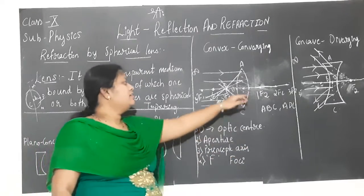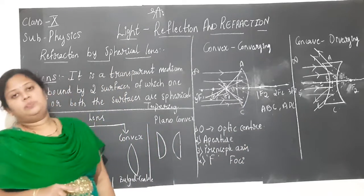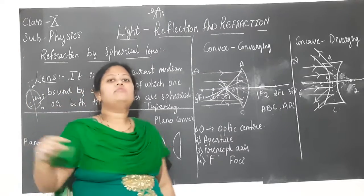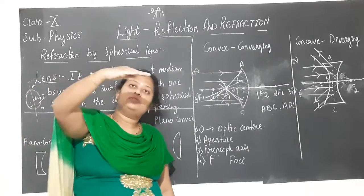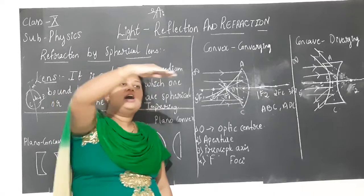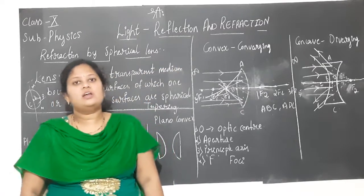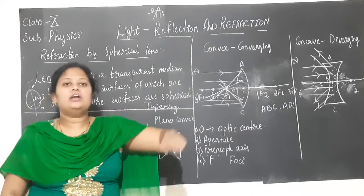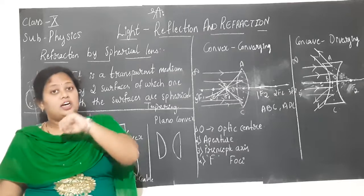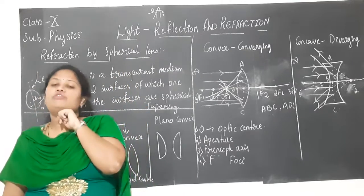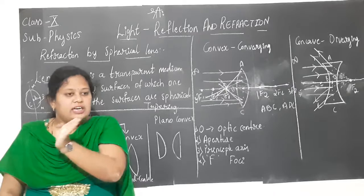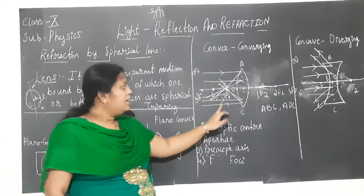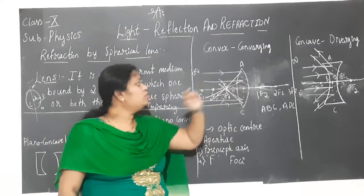We have already studied with respect to mirrors: a ray of light passing parallel to the principal axis will, after reflection, pass through the principal focus. The ray passing through the principal focus will, after reflection, go parallel to the principal axis. The ray passing through the centre of curvature will retrace its path. Here also, the ray of light passing through the optic centre behaves similarly.